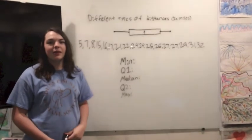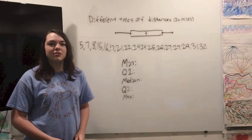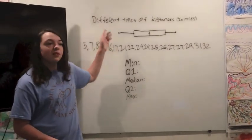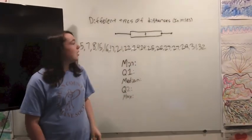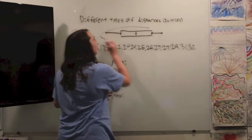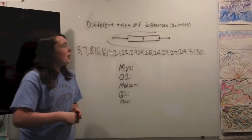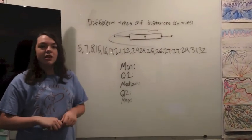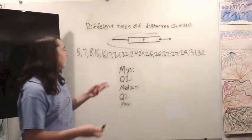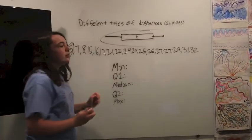Hi, my name is Emma Plank and I'm going to teach you how to make a box and whisker plot. So I'm doing the problem different types of distances in miles. This is an example of a box and whisker plot. So first you need to find the minimum, which is the least amount, and that is five.